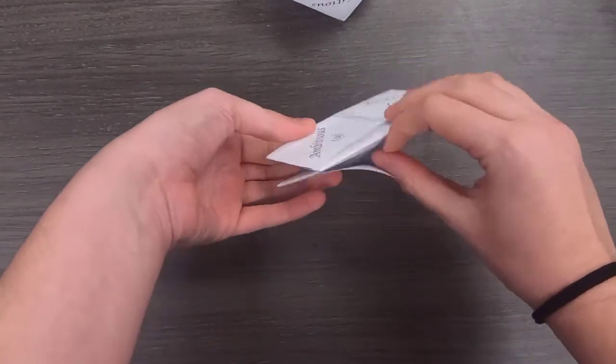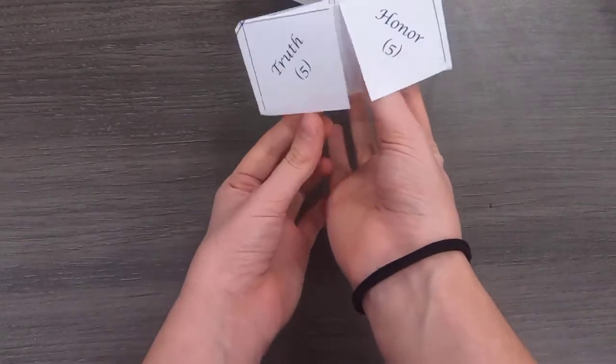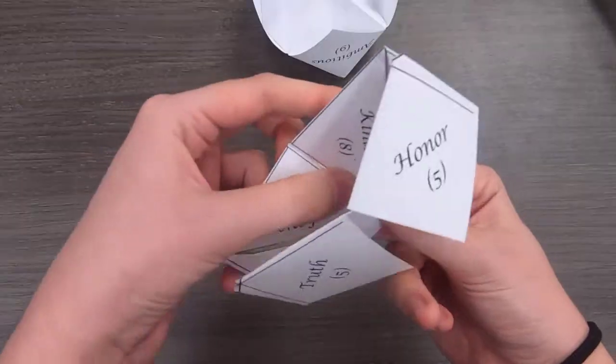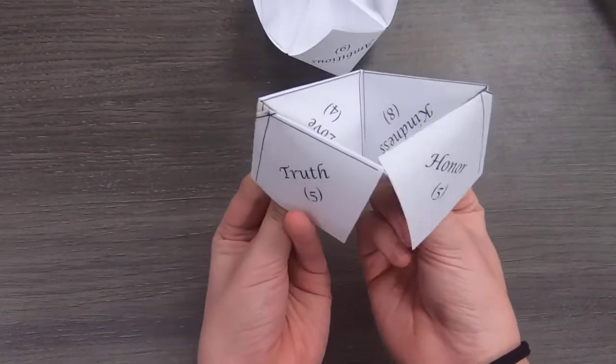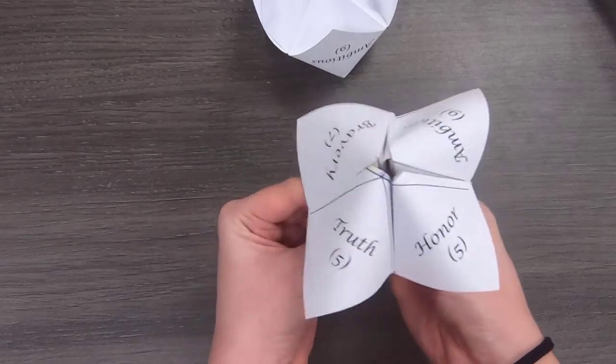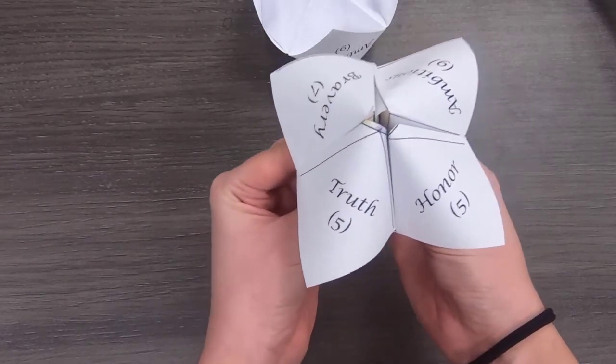And from there, you can put your thumbs and your finger in this thing. Pop it out a little bit. Make sure it works all right. And there you go. There's the initial fortune teller. Now the question is how to use it.